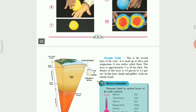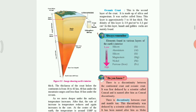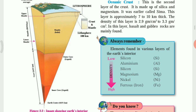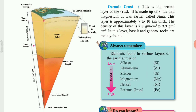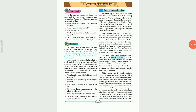Now let's start the second lecture. This figure is also very important. You can see the upper layer — the blue layer — is the crust. Then the yellow layer is the mantle layer, and the orange and reddish layer is the core. Now let's begin the second chapter of geography: the interior of the earth.